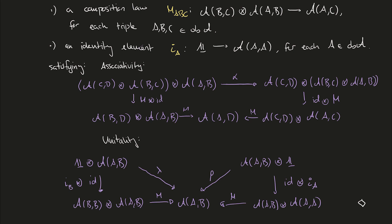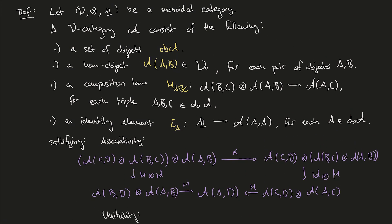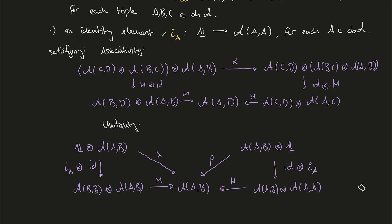This concludes the definition of a category enriched over a monoidal category V. Since the definition doesn't fit on one screen, let me review it once more. A category enriched over a monoidal category V, called a V-category, consists of the following data: a set of objects ob(A); for each pair of objects, a hom object living in the monoidal category V; a composition law, which is a map in V taking two hom objects with overlapping codomain and domain and producing a third; and finally an identity map in V from the monoidal unit to the hom object of an object with itself. These data are required to make two diagrams commute: one expressing associativity, and one expressing unitality.